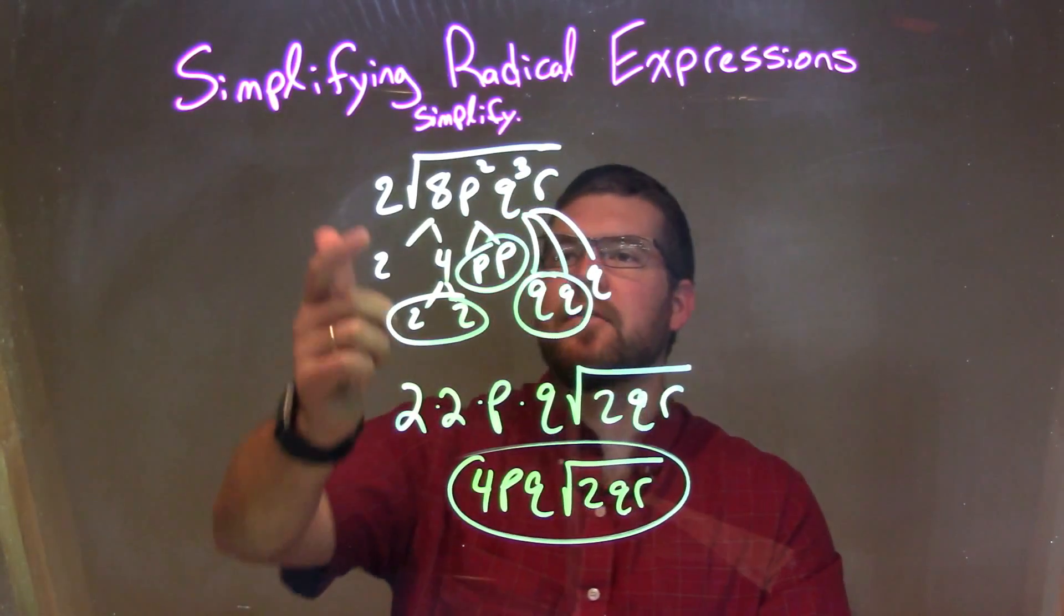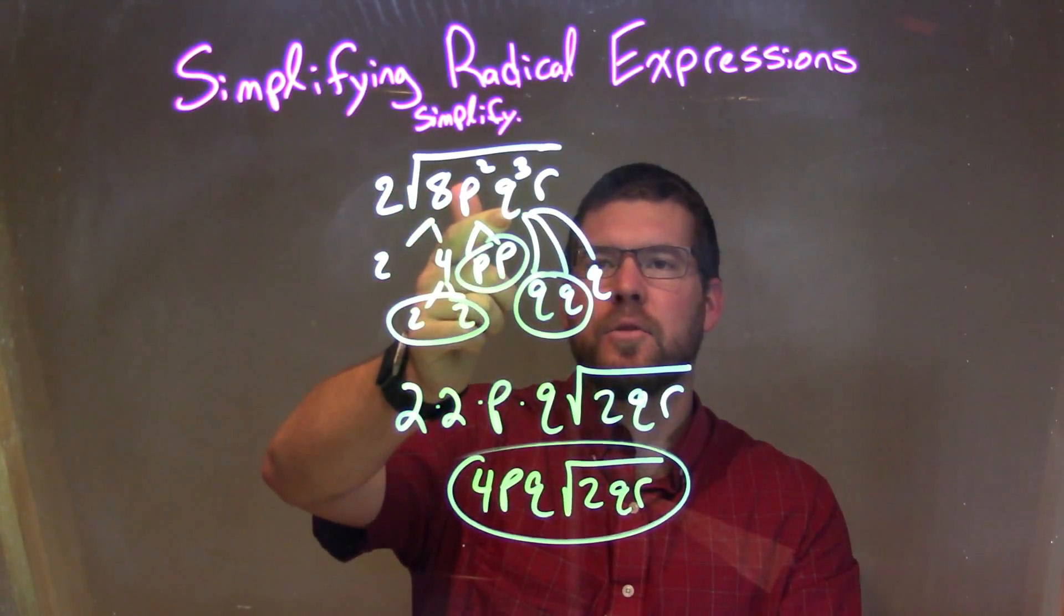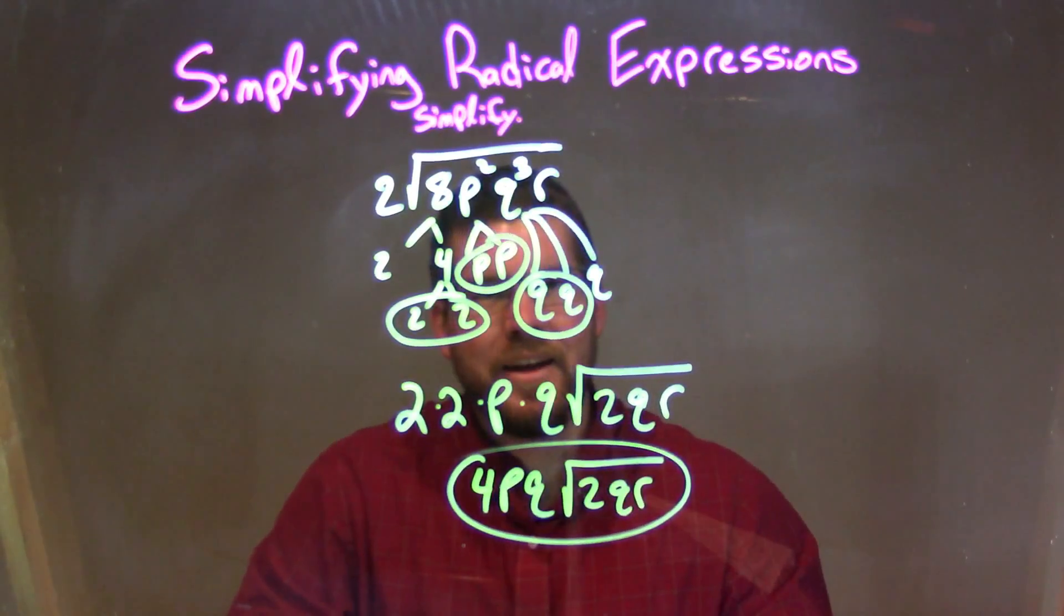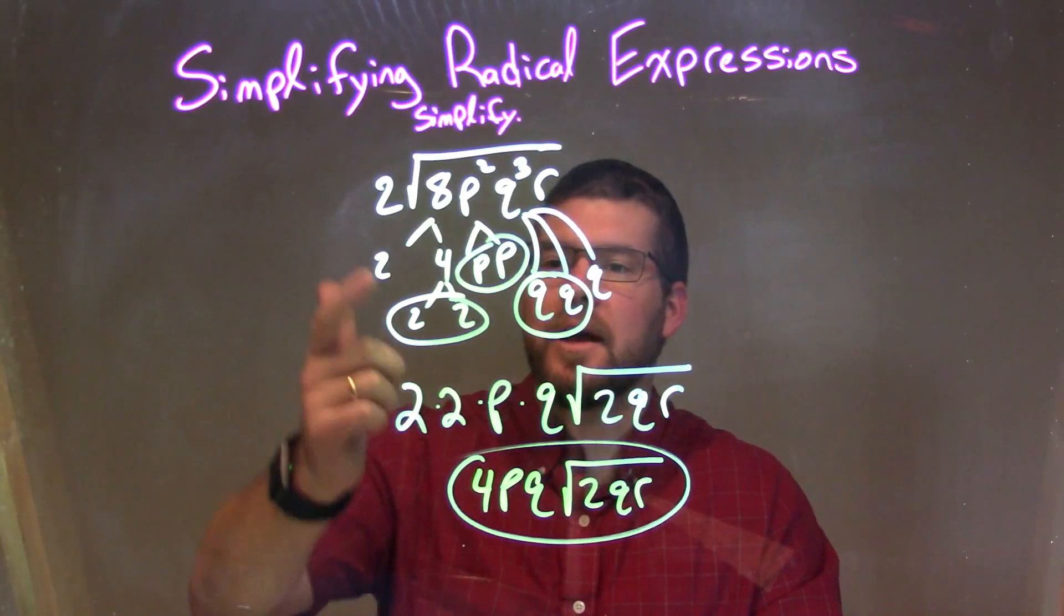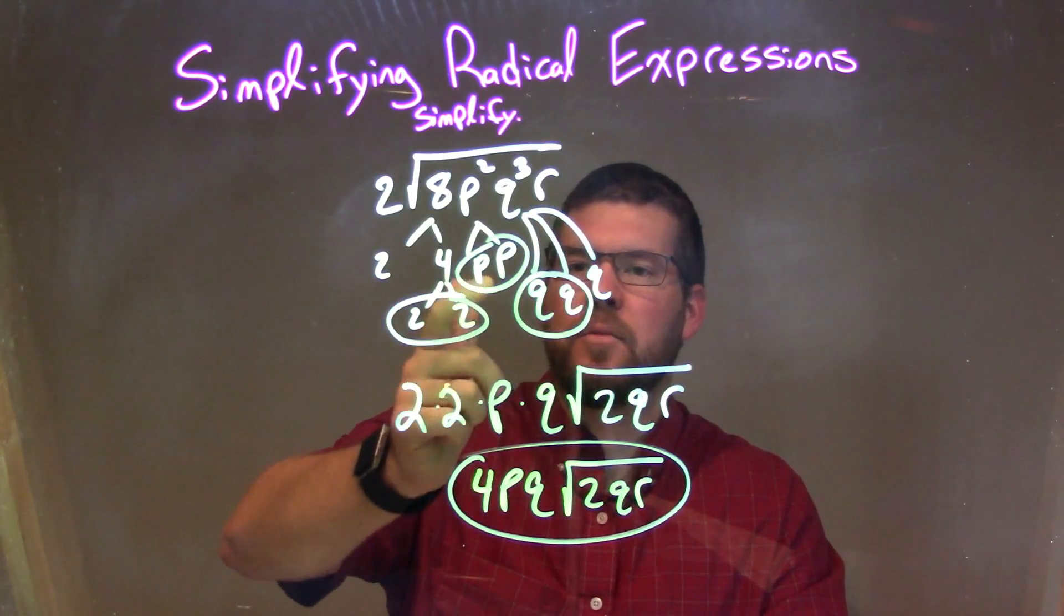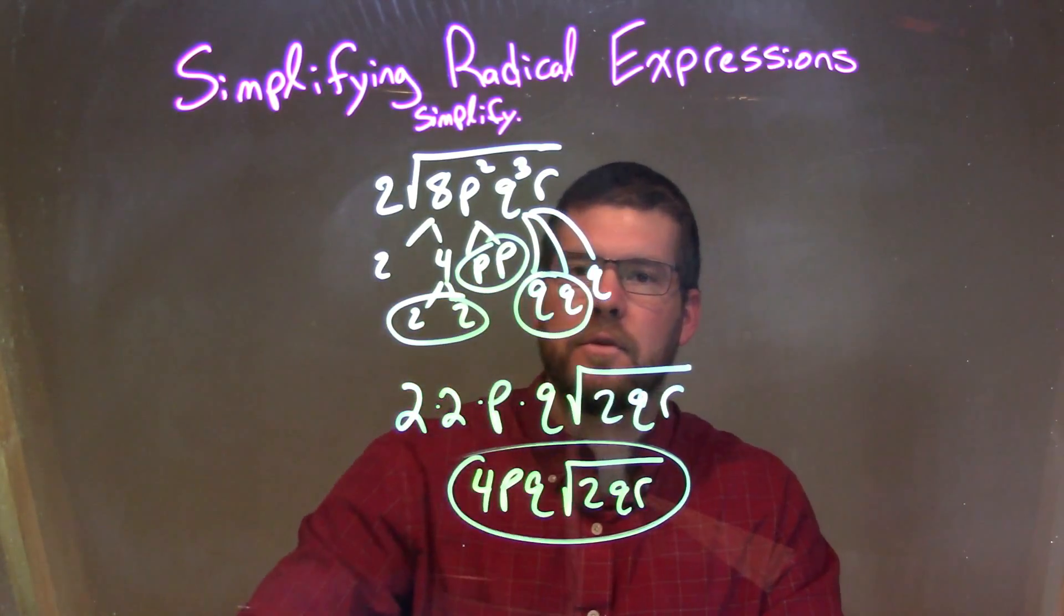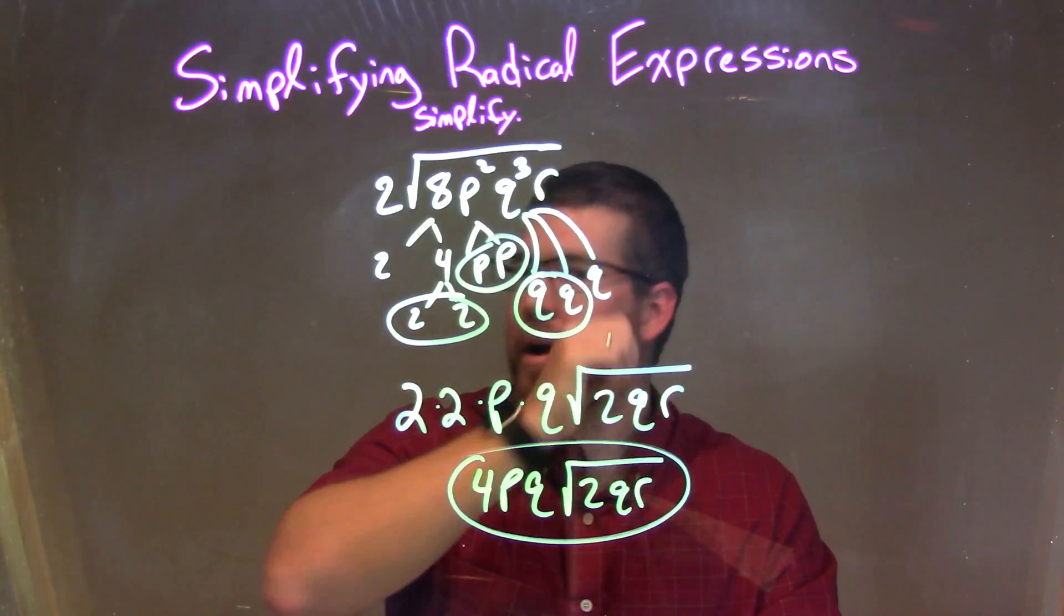Let's recap. We're given 2 times the square root of 8p²q³r. We broke that down into prime factorization: 2×2×2×p×p×q×q×q×r. Don't forget the r was still there.